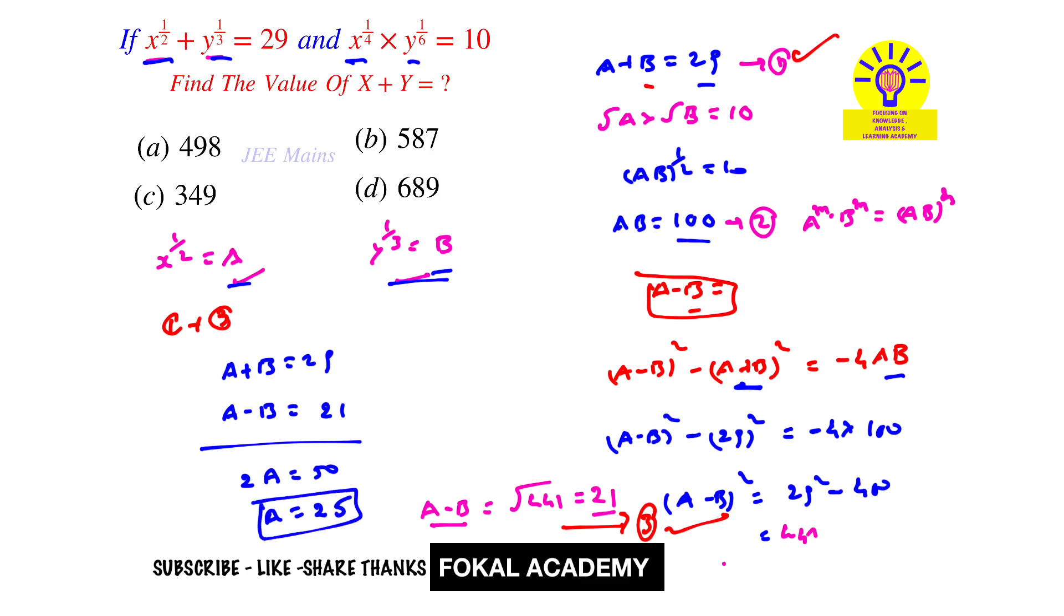Now substitute a value in equation 1 or equation 3 to get b value. I'm substituting in equation 3: 25 minus b equals 21, so b equals 4.